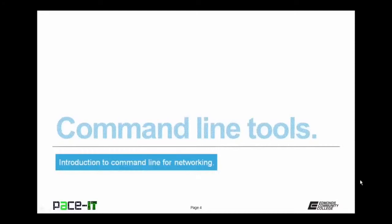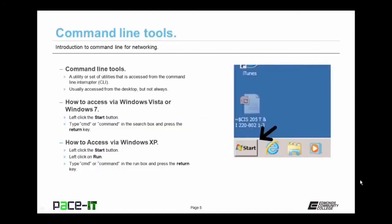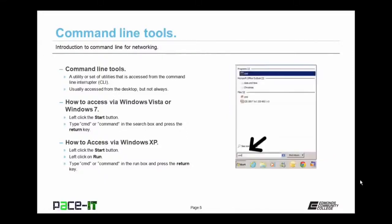Command line tools are a utility or set of utilities accessed from the command line interpreter, usually from the desktop. To access them in Vista, click Start, then type 'command' or 'CMD' in the run box. In Windows XP, click the Start button, then click Run, and enter CMD or command to get access to the command line.